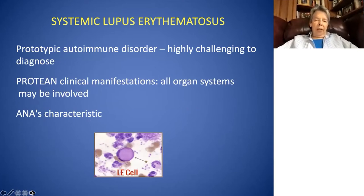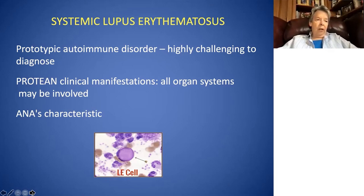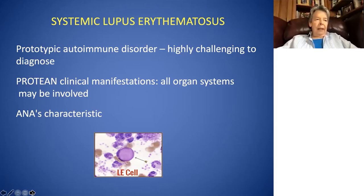Lupus is a prototypic autoimmune disorder. If you look at this word and get a cold sweat and say you can't diagnose lupus, don't feel alone, because it is very challenging to diagnose, even on some occasions to someone who's well-versed in the discipline such as me. I've had surprises throughout my career — people whom I didn't think had it who turned up later with more definitive findings. So just pay attention to these slides; I think this will help quite a bit.